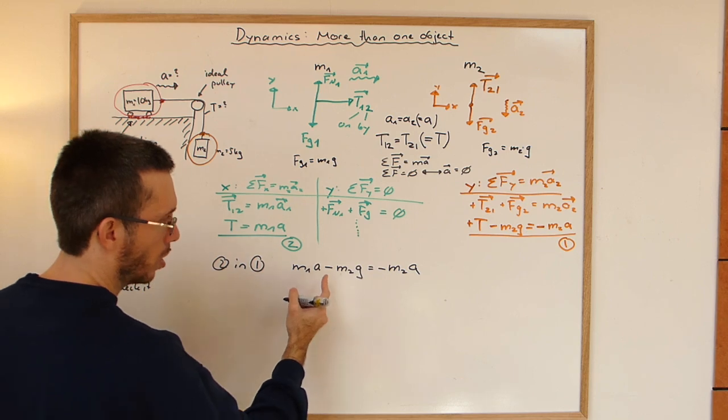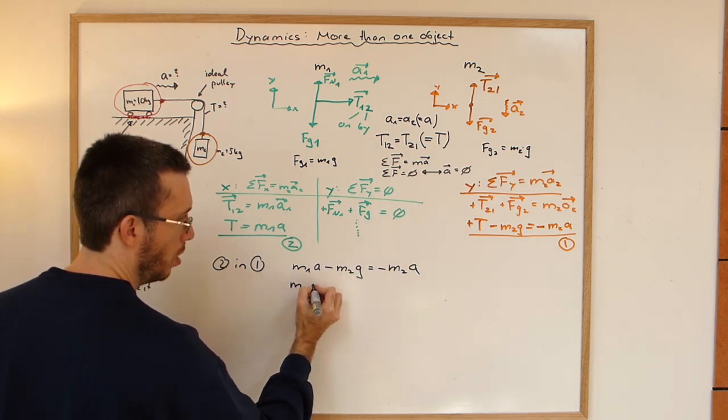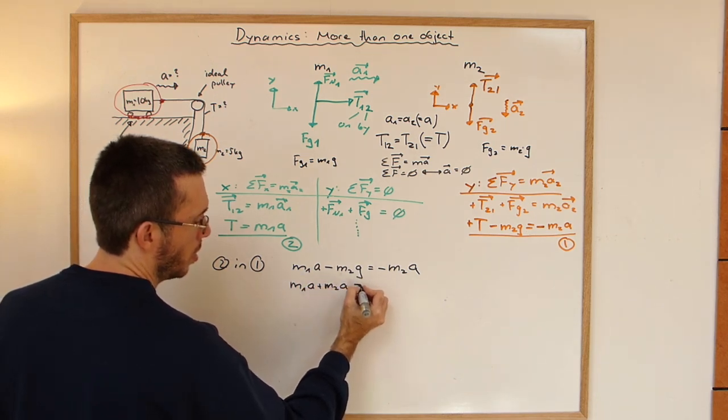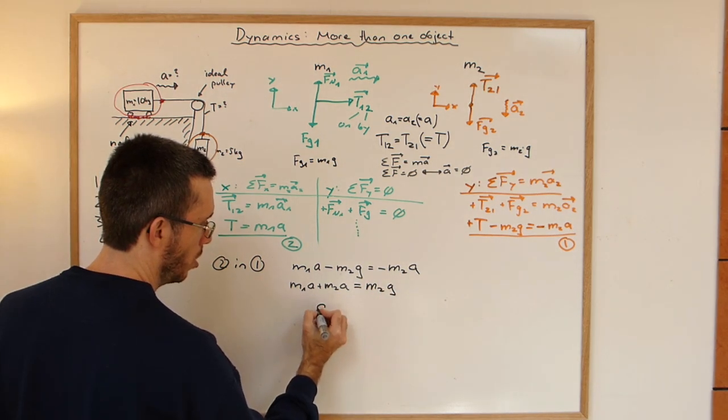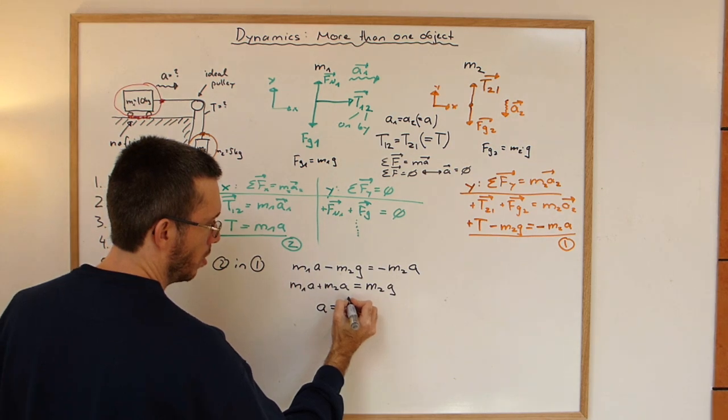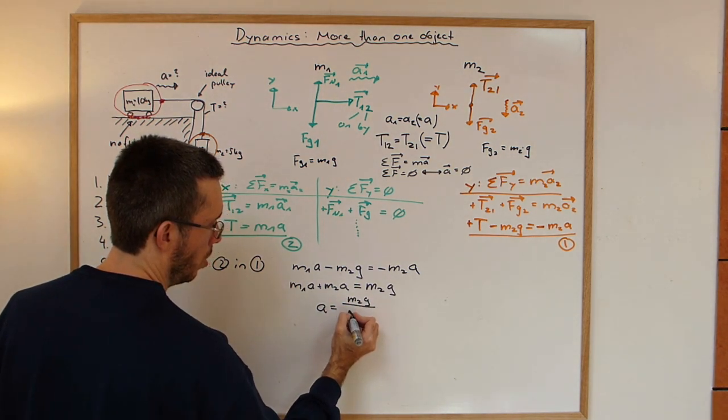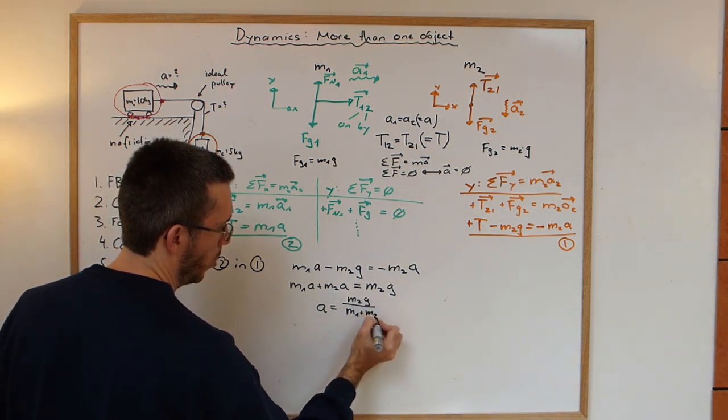I have one equation that I should be able to solve for the acceleration. So what can I do? Everything with acceleration has to be on one side. m1A plus m2A is m2g.